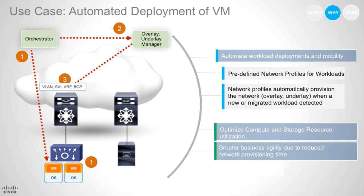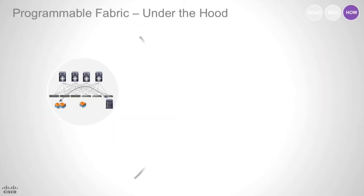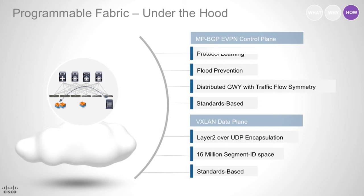So how does this all work? How is this really supported? On the bottom layer, you have a standards-based VXLAN data plane. VXLAN, as a standard, allows you up to 16 million segments, so you get a lot of scale. It's essentially a MAC-in-UDP over IP encapsulation — well-known, well-understood, mature constructs that are available to you.